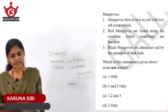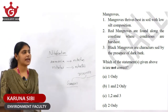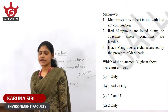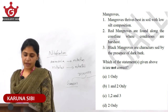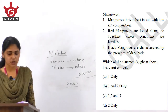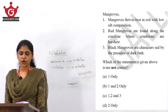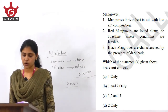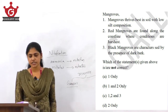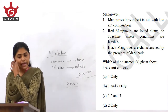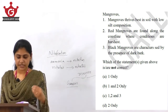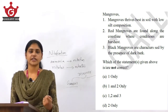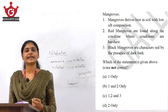Question number 11 deals with mangroves. Consider these statements: first, mangroves thrive best in soil with low silt composition; second, red mangroves are found along the coastline where conditions are the harshest; and third, black mangroves are characterized by the presence of dark bark. You have to pick out the incorrect statements.